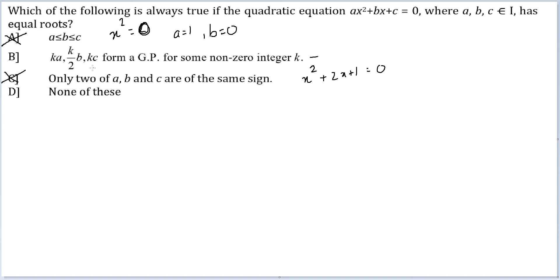So the only thing to check is the second one now. Because all of them are getting multiplied by k, it is useless. Effectively, what statement B is saying is a, b/2, and c form a GP. If they form a GP, (b/2)² is equal to ac. I would have to check whether this is true, or b² is equal to 4ac, or b² - 4ac is equal to 0.